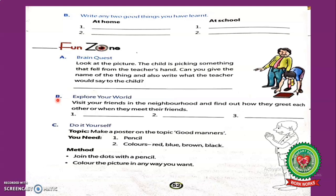Now read exercise B — explore your world. Visit your friends in the neighborhood and find out how they greet each other when they meet. There are different ways to greet friends. Think and write your answer in the book.